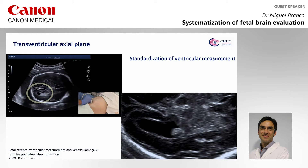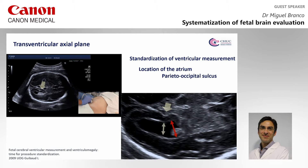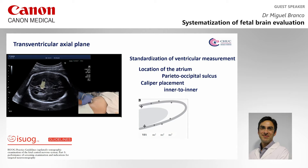In the transventricular plane, we measure the atrium. We identify the parieto-occipital sulcus and place the calipers at this level, inner to inner.